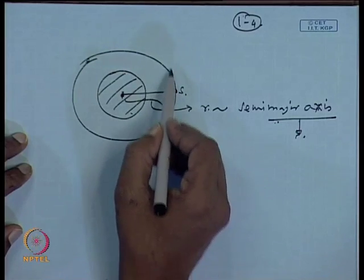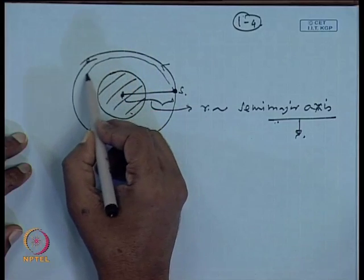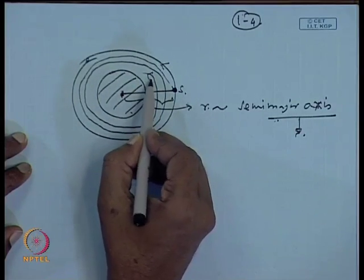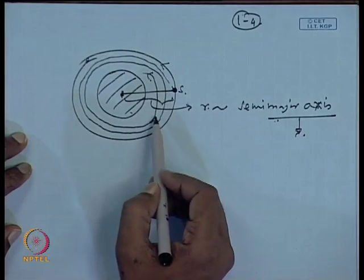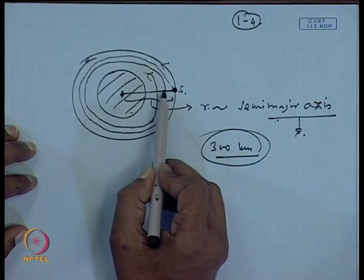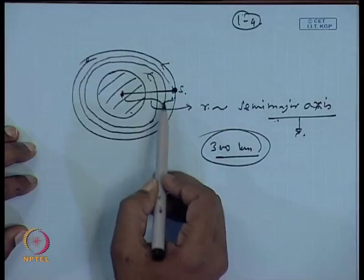Over a period of time the satellite interacts with the atmosphere; atmospheric drag is a resistive force that takes away the satellite's energy, and therefore the semi-major axis continuously goes down. If atmospheric drag is large, the satellite will start drifting from its orbit, slowly coming into the denser atmosphere where friction generates a lot of heat and the satellite gets burnt. That is why satellites are put at high altitude, so they remain there longer.